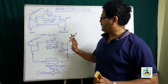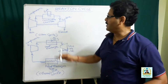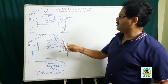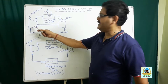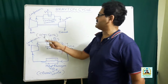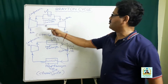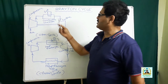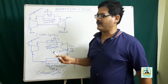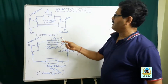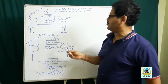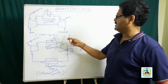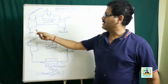Before discussing the Brayton cycle, let me briefly tell you what happens in the open cycle and in the closed cycle. In the open cycle, air is taken into the compressor where it is compressed, and then this compressed air is taken to the combustion chamber. In the combustion chamber, fuel is added and a huge amount of thermal energy is developed. The working substance is then taken to the turbine where it undergoes expansion, does some mechanical work, and then it is exhausted and fresh air is taken to start a new cycle.